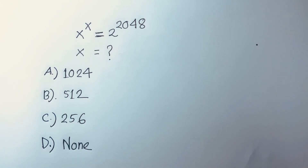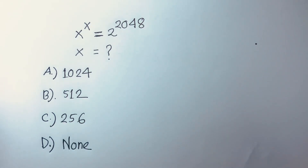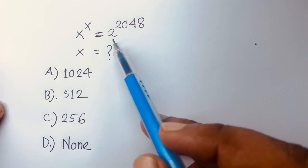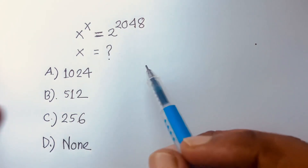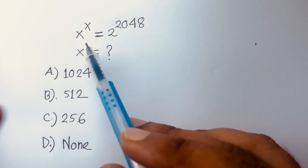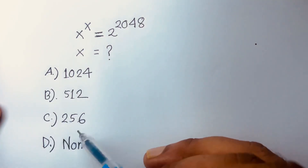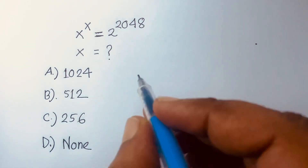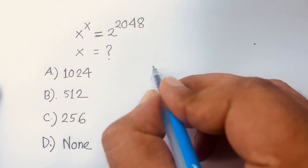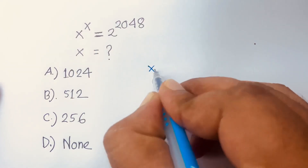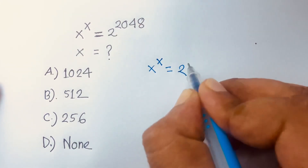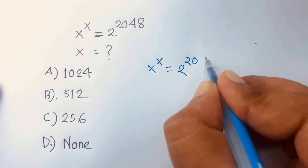Hello everyone. In this video we are solving this exponential problem: x to the power x is equal to 2 to the power 2048, and x is equal to what. Here are four options — we are going to find out what is the right option. So here is x to the power x is equal to 2 to the power 2048.